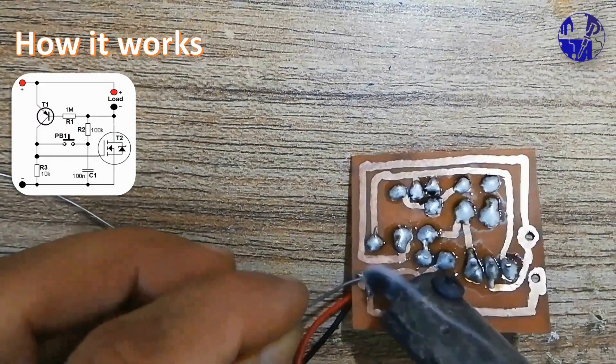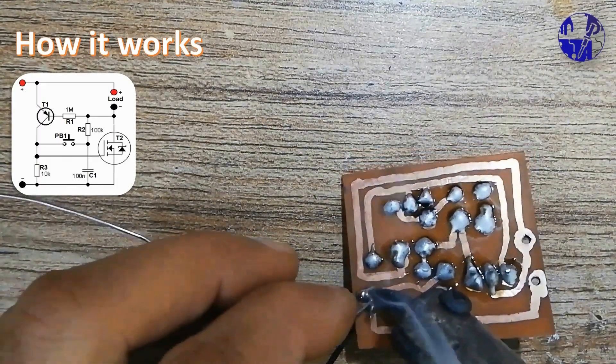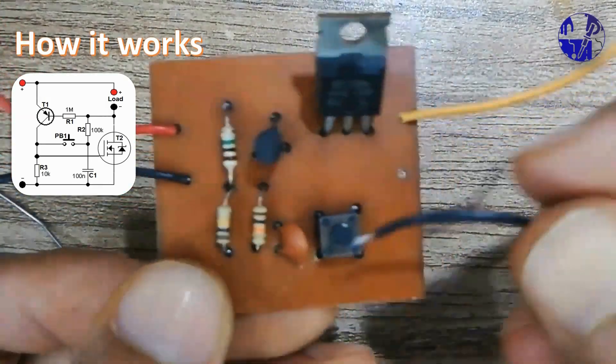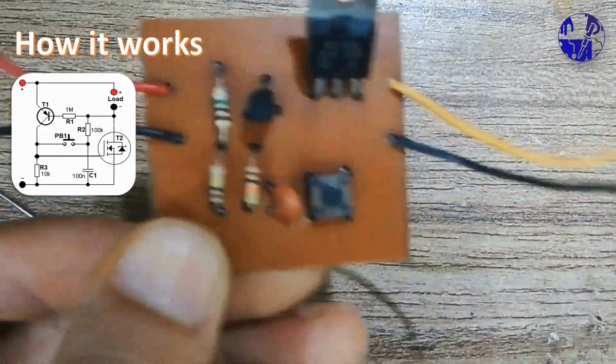Simultaneously, T1 opens through resistor R1, maintaining a positive voltage on its gate. Capacitor C1 discharges through R2 and T1.